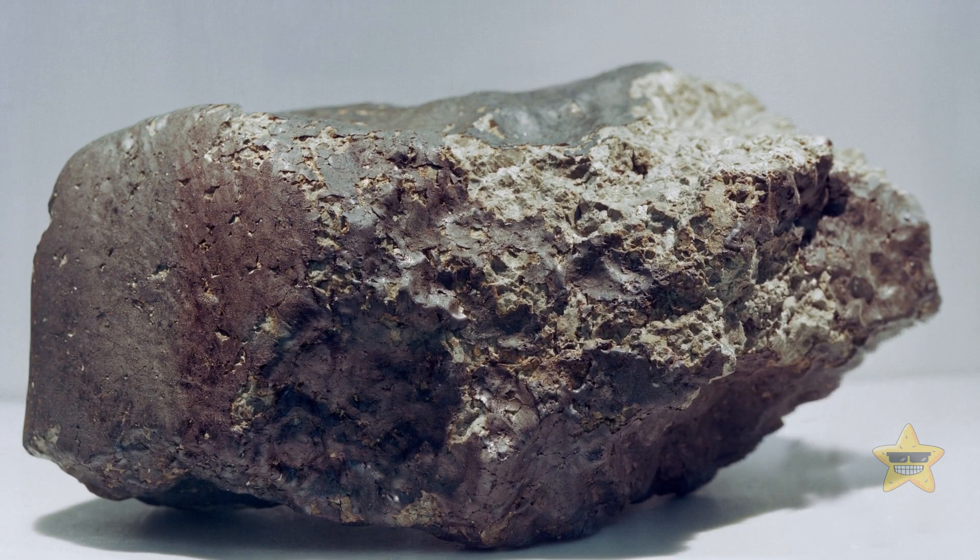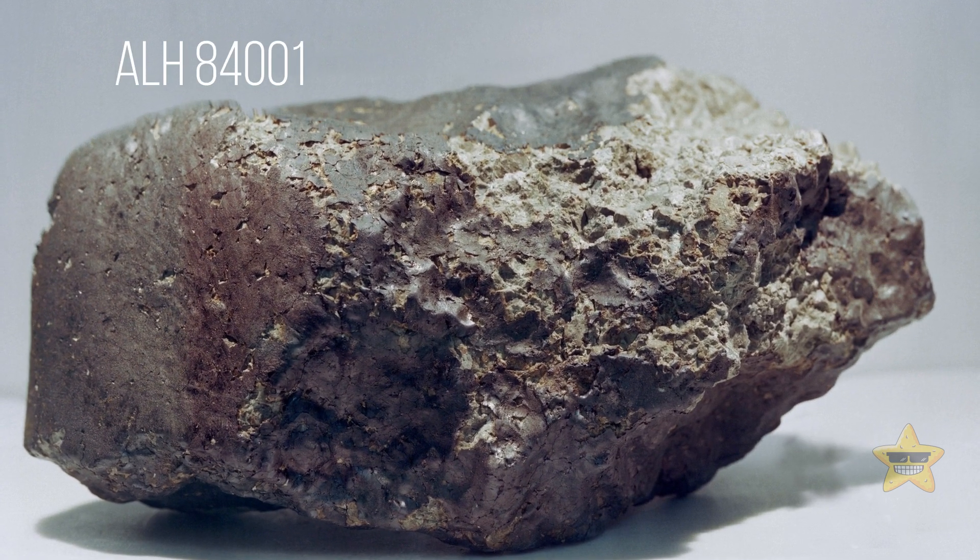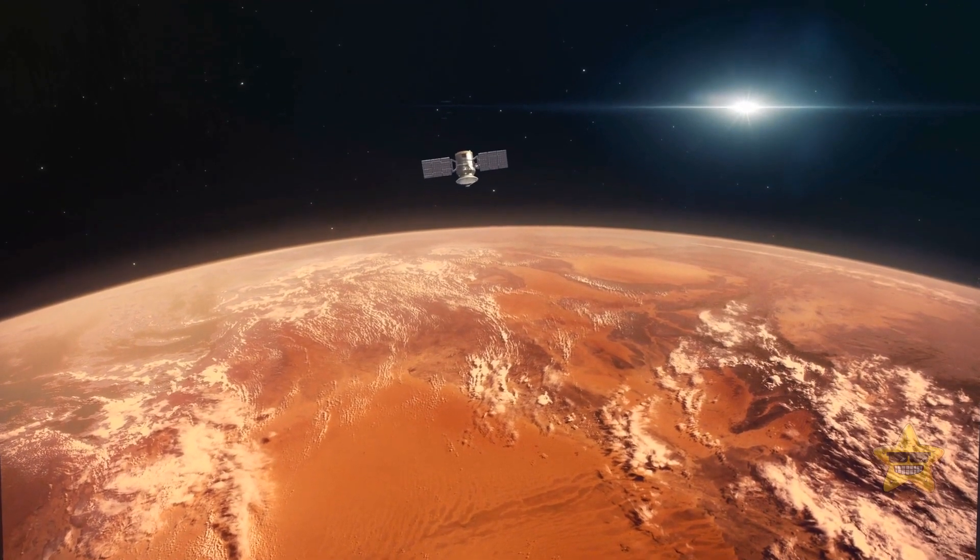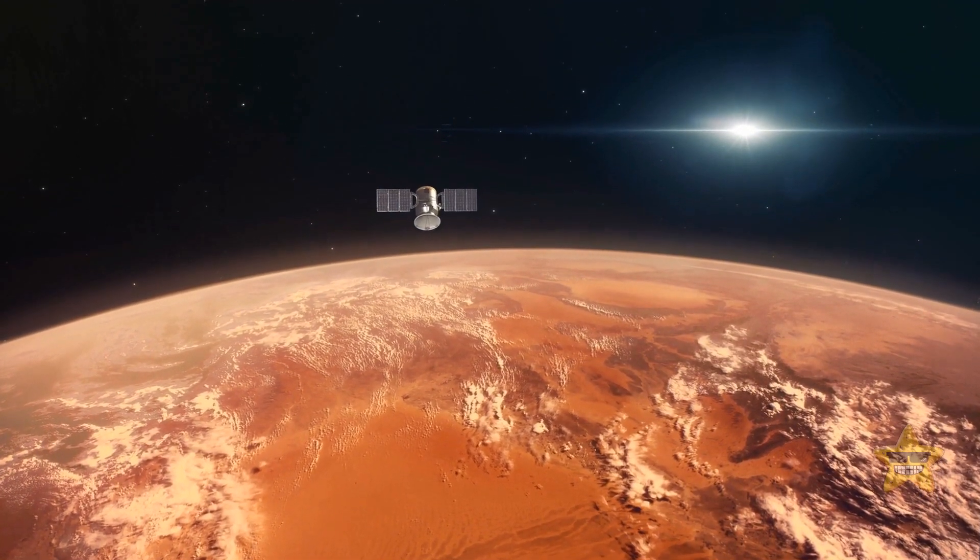Roberta's rock, known as ALH 84001, was initially unimpressive. However, it turned out to be extraordinary. It was a piece of Mars.